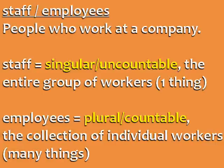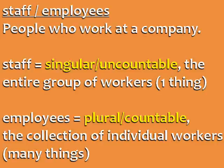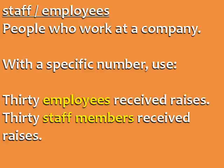Staff and employees. Both of these words refer to people who work at a company. But staff is always singular and uncountable — it describes the entire group of workers as one thing. Employees is countable and plural — it describes the collection of individual workers. Notice that with staff we use was, and with employees we use were. Whenever you use a specific number, use employees or staff members.